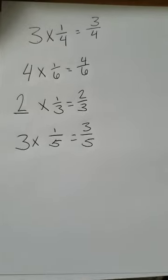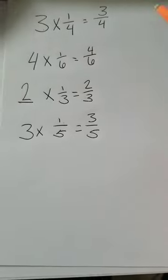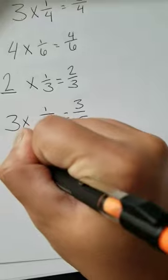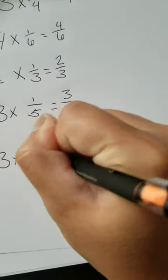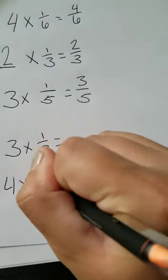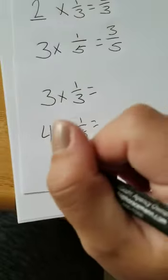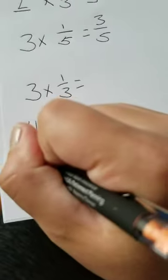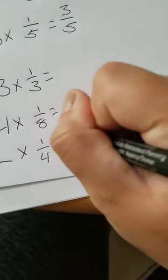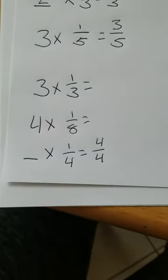Now, let me give you a couple problems to practice this week. Hopefully, multiplying whole numbers and unit fractions should be a piece of cake. On your own, I would love it if you would try 3 times 1 third, 4 times 1 eighth, and let's do one more for fun. Make it a nice 3 problems. Let's do blank times 1 fourth equals 4 fourths. Ooh, so there's your 3 problems I want you to try.